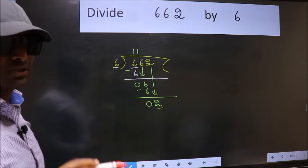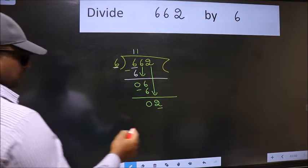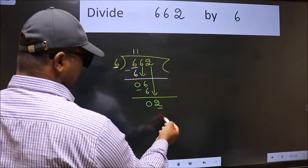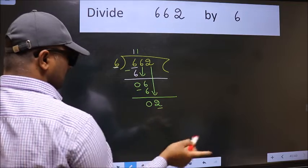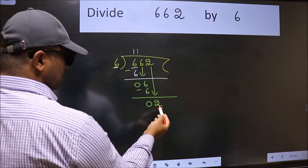Instead of that, what you should think of doing is which number should we take here. If I take 1, we will get 6. But 6 is larger than 2.